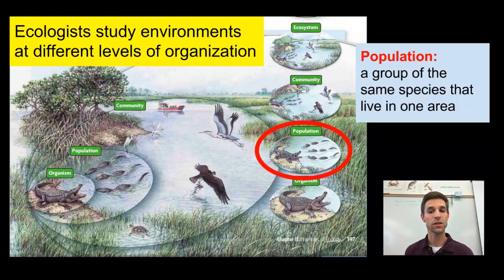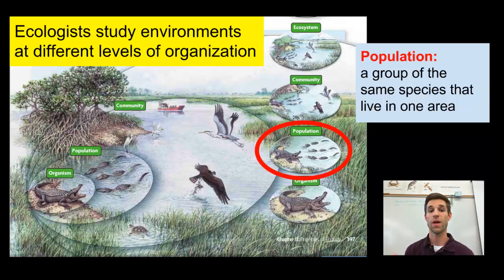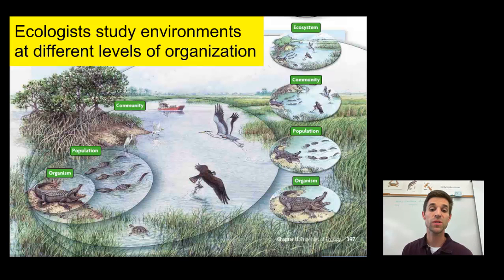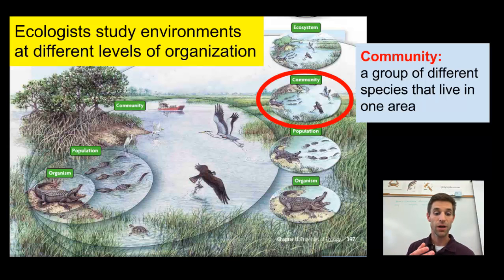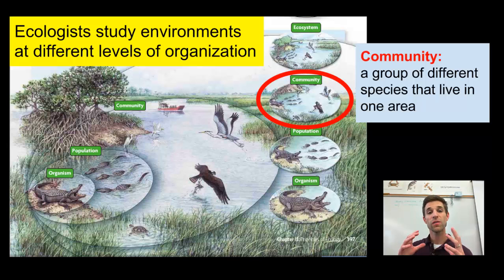You can also study populations of organisms. A population is simply a group of the same species. So if there were a number of alligators in this environment, somebody studying the alligator population would be concerned not with just one alligator, but with all the alligators in that ecosystem. Ecologists can also study communities. A community is a group of different species that all live in one area. The different species here could be the alligator, the osprey, the blue heron, the turtle, the fish in the water, but also the vegetation — the mangrove trees, the salt marsh grass. That would be the ecosystem community, and ecologists studying it would have to think about all types of organisms that make up that community.